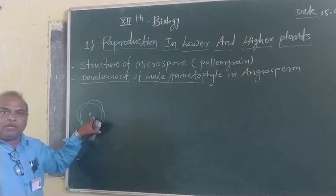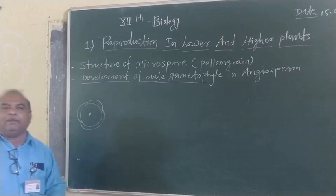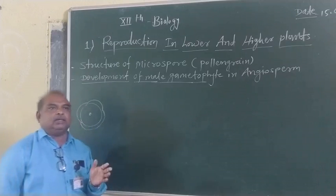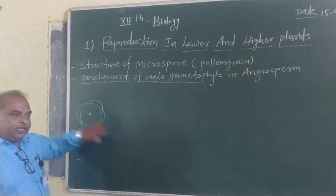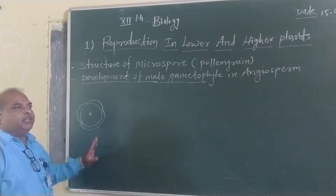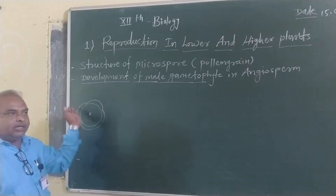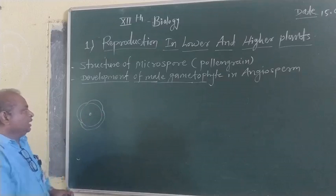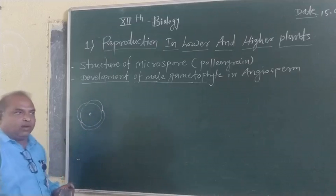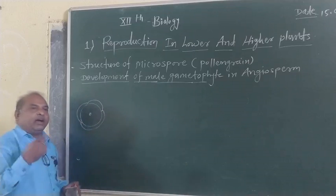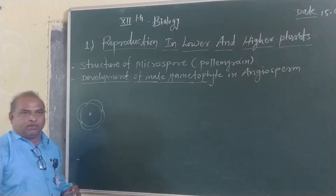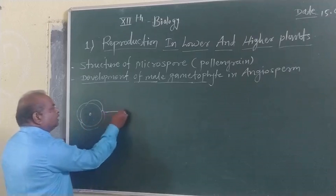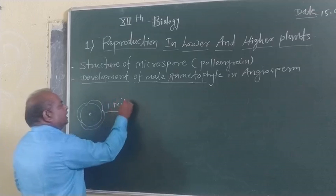The development of the male gametophyte takes place at two places. Half of the development of the male gametophyte takes place within the anther, whereas after the pollen grain is released from the anther, it is transferred through pollination up to the stigma, where the remaining development takes place on the stigma. So the development occurs both before pollination, within the anther, and after pollination, on the stigma.